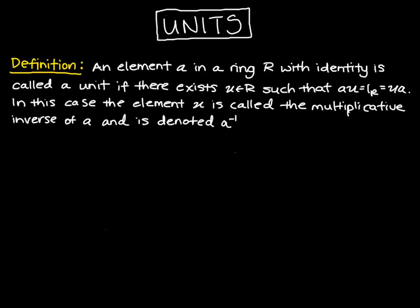Here we're going to focus on units and zero divisors. An element a in a ring with identity is called a unit if there exists some u in the ring so that when you multiply a and u, their product is the identity element in the ring, and the same for u times a. In this case we call that element u the multiplicative inverse of a, and we denote it by a inverse, using a negative one as a superscript on a.